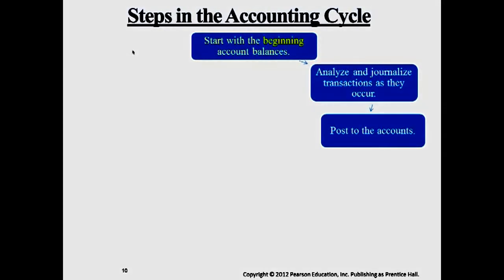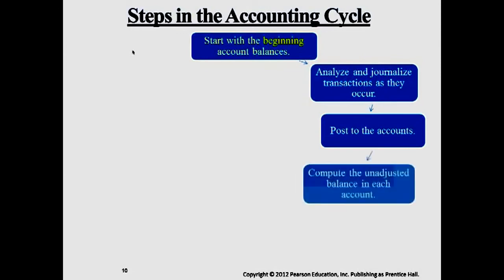When it reaches almost the end of the month — if the company is doing monthly statements — we try to compute the unadjusted balance based on all the journal transactions that happened. That produces the first column of the worksheet: the unadjusted trial balance.